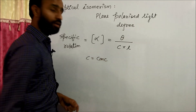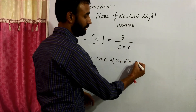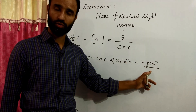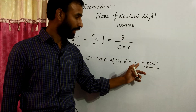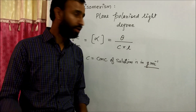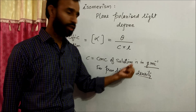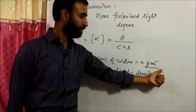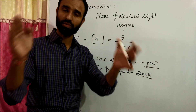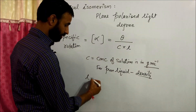Theta is the angle of rotation in degrees. C is concentration — keep in mind, concentration is not in mole per liter. The concentration of the solution is in gram per ml. It is not molarity, not molality, not mole fraction. For a solution, it is grams of the substance per ml of the solution.